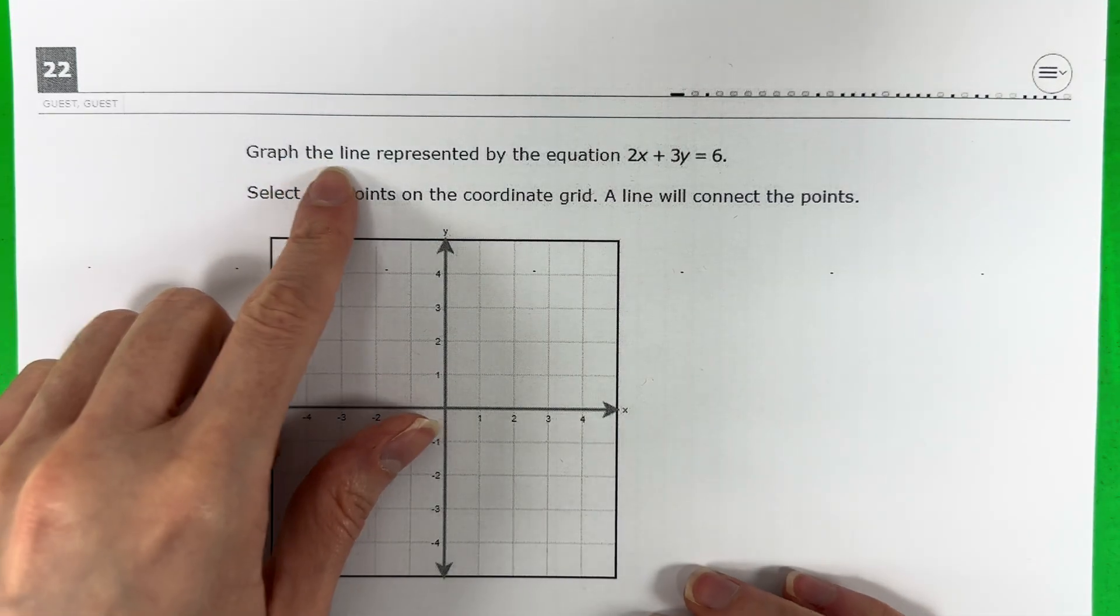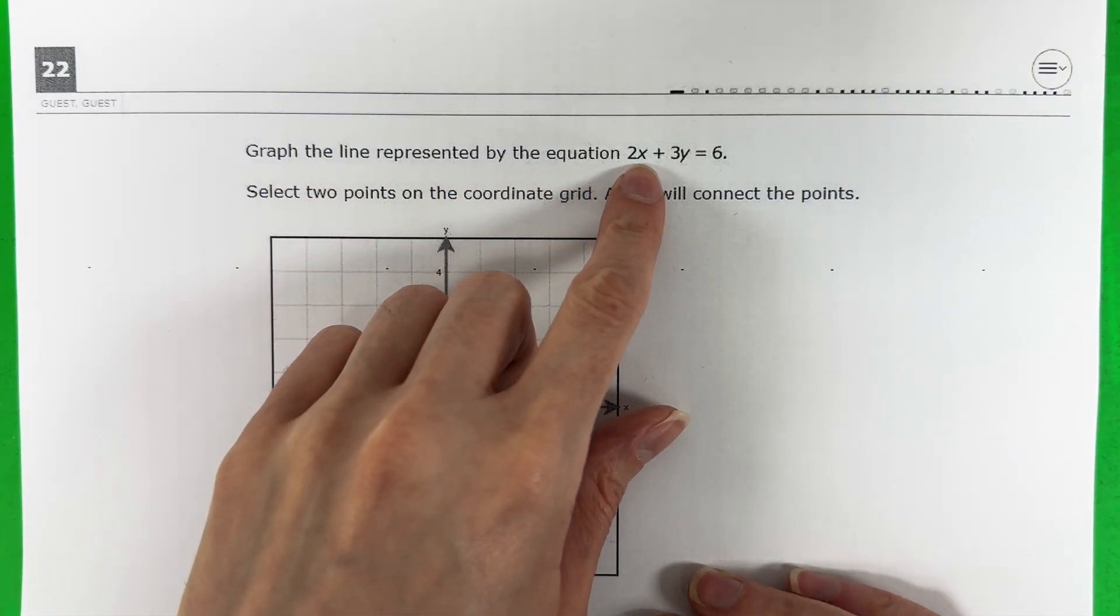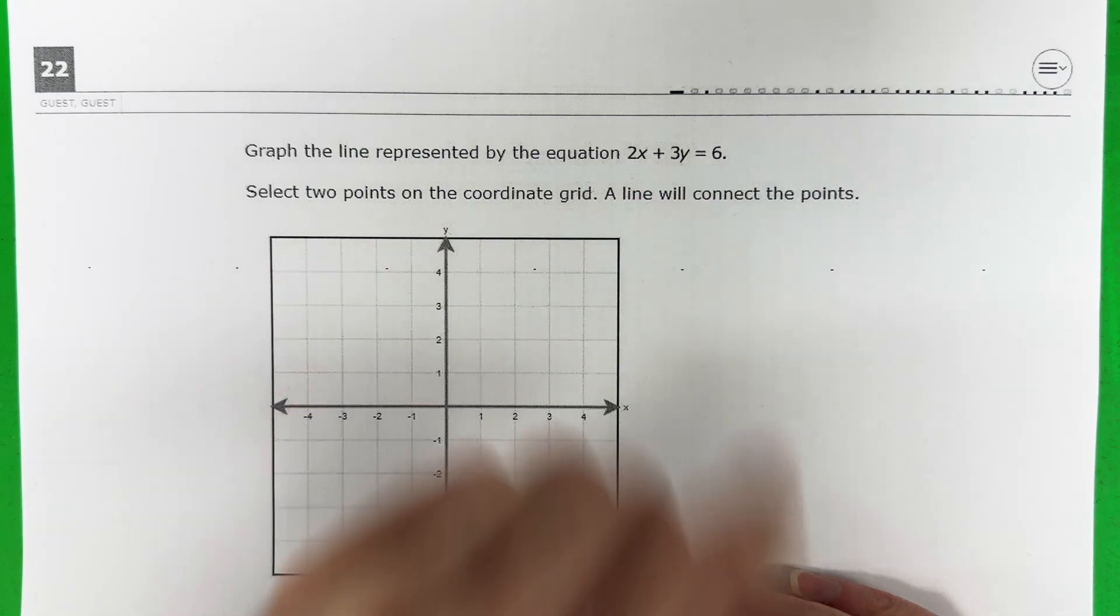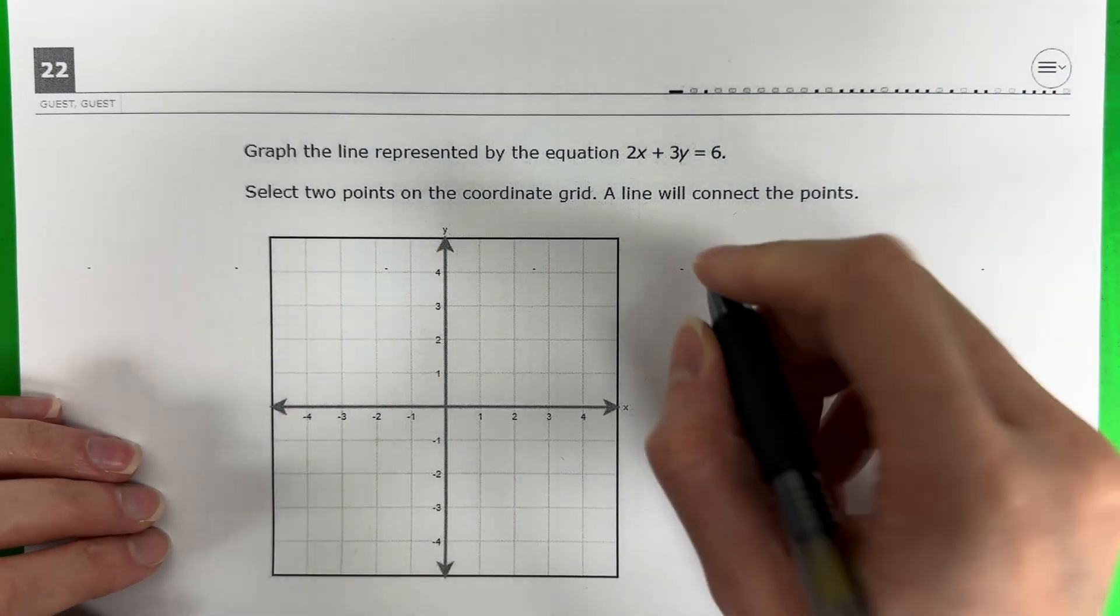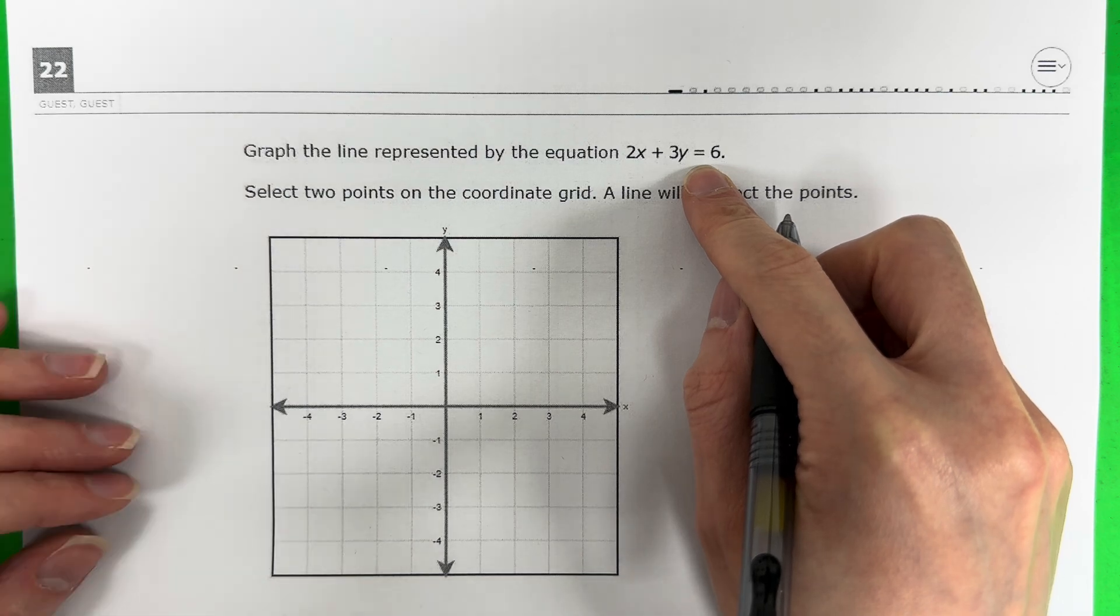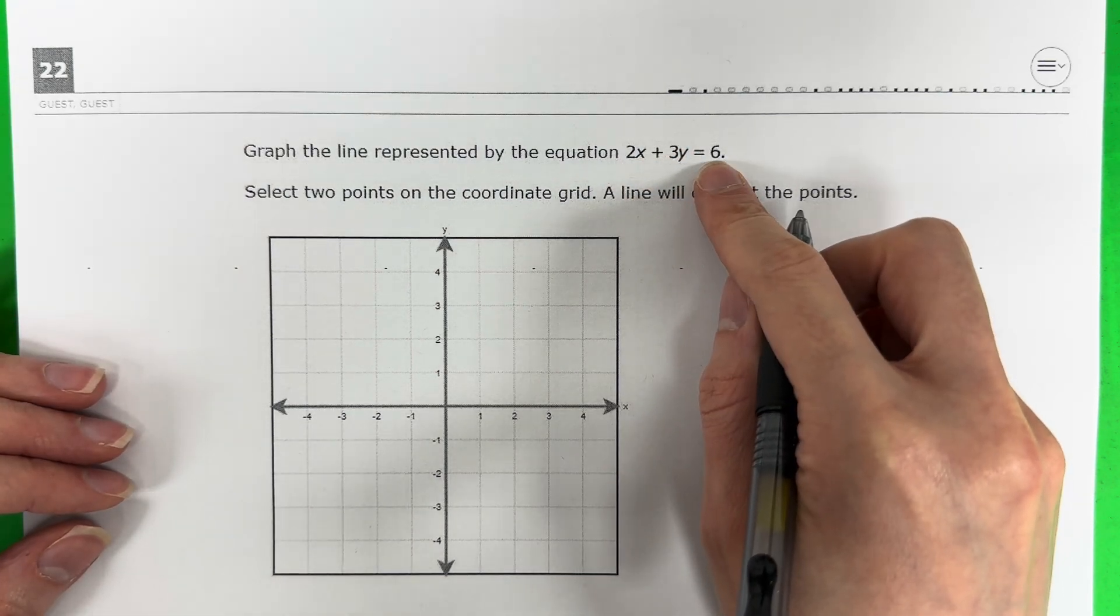Question 22. Graph the line represented by the equation 2x plus 3y equals 6. Alright, so I have 2x plus 3y equals 6 and I need to graph it. This is in standard form.